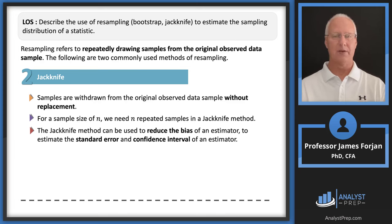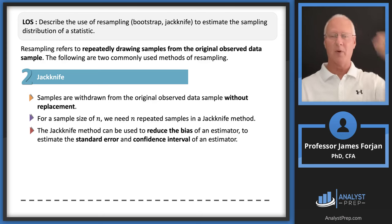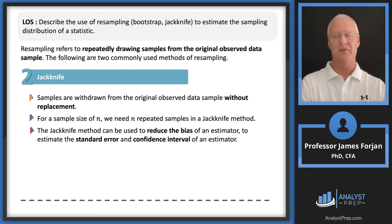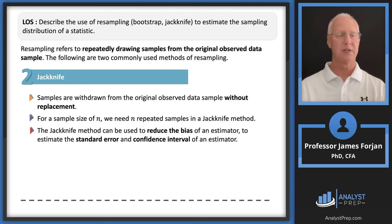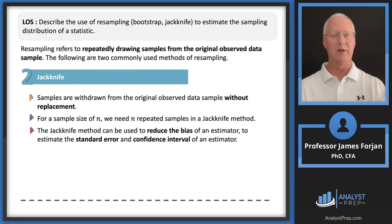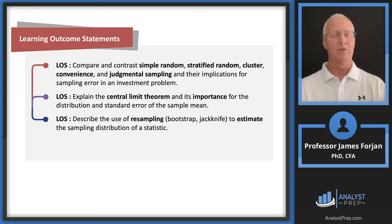Let's end on jackknifing. We repeatedly draw samples from the original observed data, and we can do this with or without replacement. With jackknifing, you take one observation out, run statistics on the remaining sample, put it back in, take out another, and repeat. It's used to reduce bias in an estimator and to estimate the standard error and confidence interval of an estimator. The results will likely be pretty similar distributions across iterations.